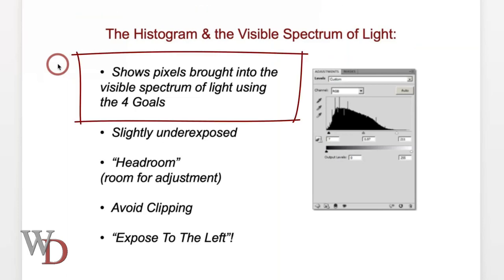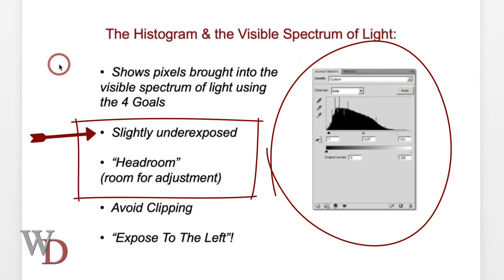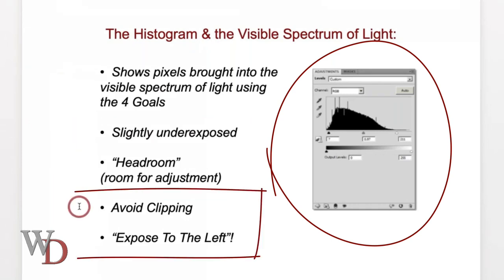The histogram shows those pixels brought into the visible spectrum of light from your original bucket of RAW capture. By bringing your file from ACR into Photoshop following the four goals, your histogram should reflect — depending on subject matter — a bias of extra pixels to the left, similar to the Levels dialog box shown on the PowerPoint: slightly underexposed with plenty of headroom, particularly in the highlights, avoiding digital clipping.